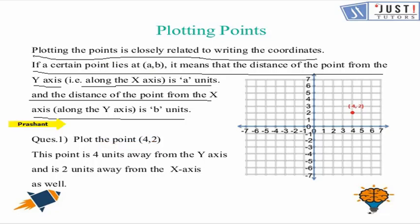For example, if we plot the point (4, 2), we start from the origin and travel 4 units along the x-axis. You can see that we travel 4 units, so we are 4 units away from the y-axis.